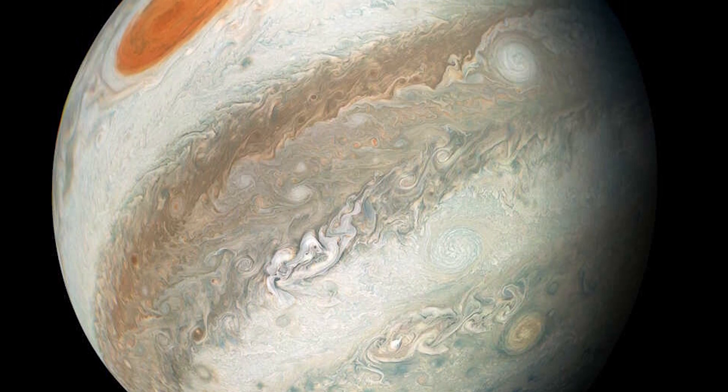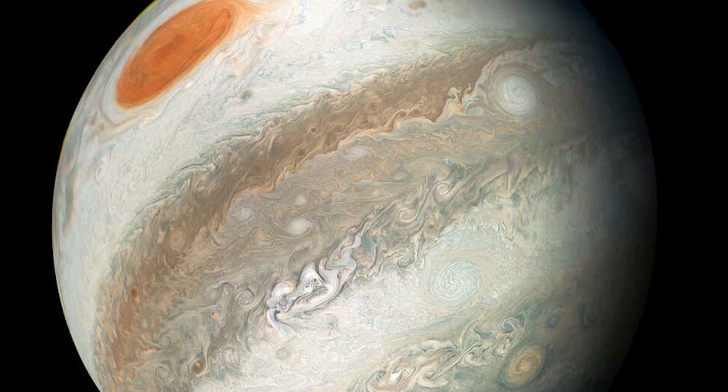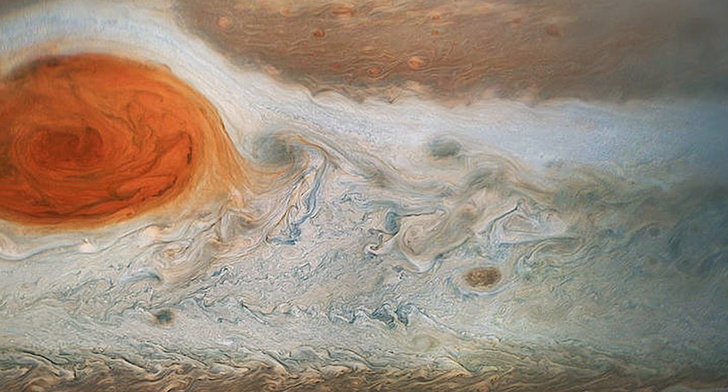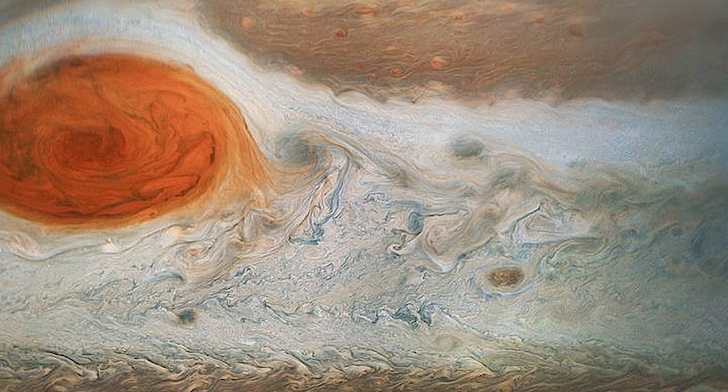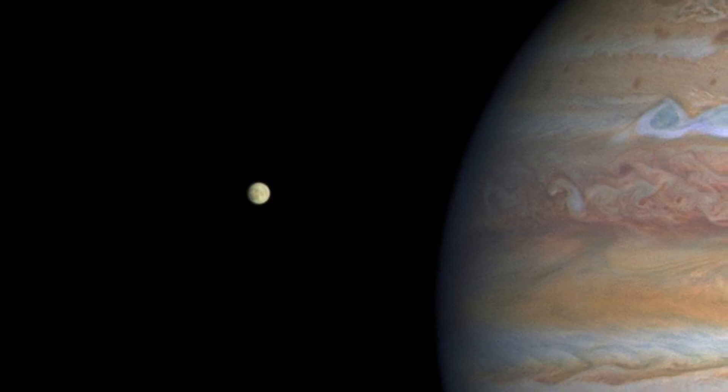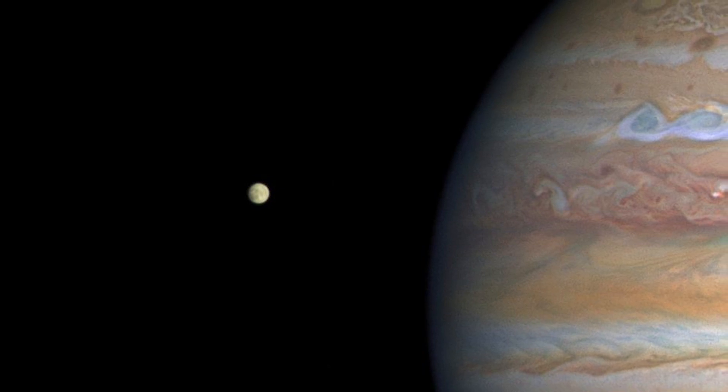When we study Jupiter more closely, we find that it is truly ferocious. Not only does the big red dot on its surface, which is believed to be a raging storm that has been ongoing for over 350 years, the fifth planet from the sun is now known as a planet eater. Yes, you heard that right.